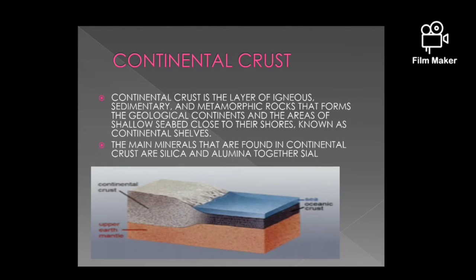Continental crust. The continental crust is the layer of igneous, sedimentary, and metamorphic rocks that forms the geological continents and the areas of shallow seabed close to their shores, known as continental shelves. The main minerals found in the continental crust are silica and aluminum, known as Sial.